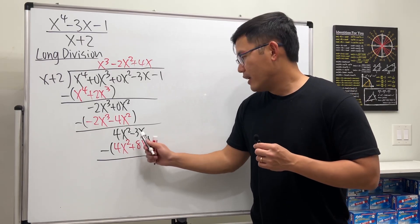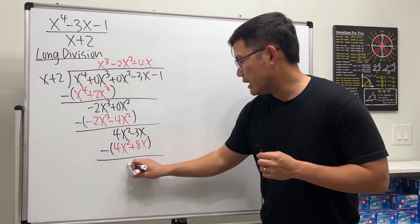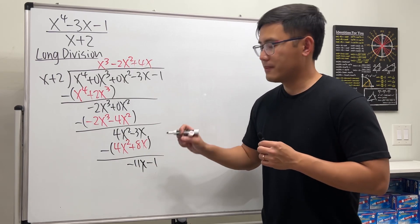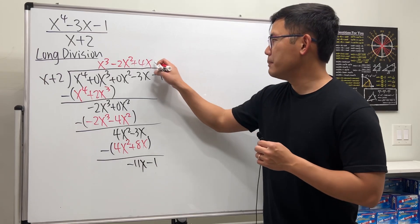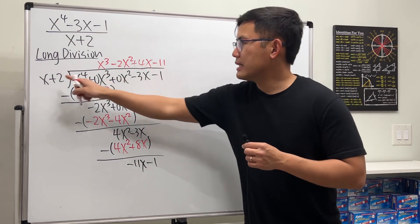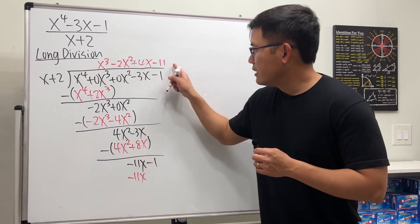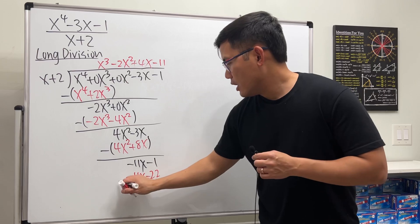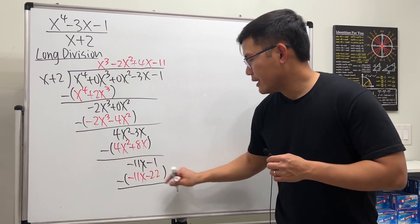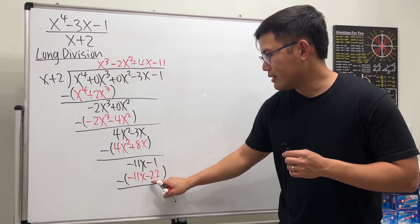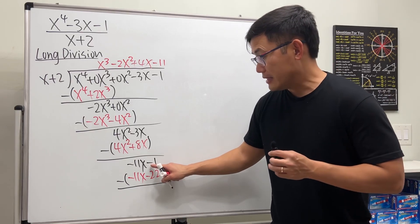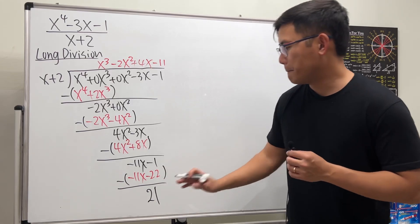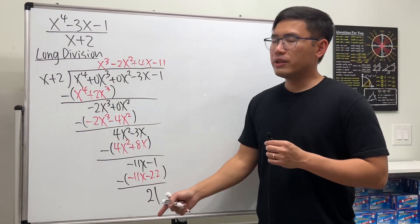Cancel. Negative 3 minus 8. We get negative 11. And of course, we have the x. And then minus 1. Finally, we just need minus 11. This times that is negative 11x. This times that is minus 22. All together, this and that cancel. Negative 1 minus negative 22. It's the same as negative 1 plus 22. So be careful. We have 21 positive. Here's the quotient. Here's the remainder.